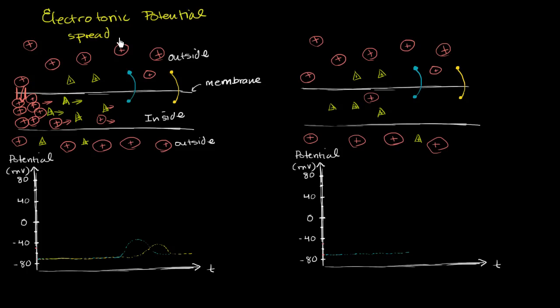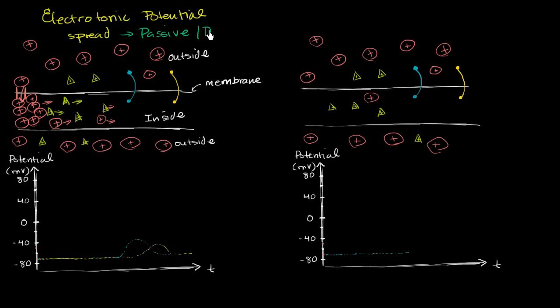There are a couple of characteristics here. One, it's passive — the electrotonic spread is what happens after the initial charge influx. Once you have a high concentration of positive charge at one point, a few moments later you'll have a higher concentration here, and a few moments later, further along — this is a passive phenomenon. And it also dissipates: the signal gets weaker and weaker the further you get out, because the charge just spreads further and further. So it's passive and it dissipates.